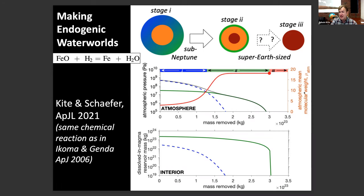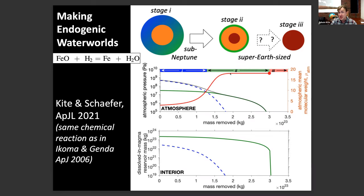Second, the water atmosphere is buffered by dissolved water. Water is very soluble in magma — more soluble than hydrogen. So as I turn on the atmosphere removal process, I'm not removing a mix of hydrogen and water; I'm removing almost pure hydrogen because most of that water is buried within the interior dissolved in the magma. It's protected from the loss process — it's just distillation. I'm removing mostly hydrogen, leaving the water behind. The atmospheric mean molecular weight gets higher and higher as I remove more mass. Why is the dissolved reservoir so massive? It's massive because water is soluble in magma, and also because the iron oxide-hydrogen reaction is volatilizing oxygen from the magma, increasing the mass of volatiles. So just because you're below the radius valley, that doesn't mean you are a bare rock — you could have a water atmosphere instead of a hydrogen atmosphere.